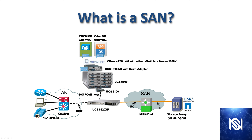You can see on the left-hand side you've got the LAN, and then an aggregation or core device on the LAN connects to the UCS-6120XP fabric interconnect. Connecting up to the fabric interconnect is a UCS-B series chassis, and the fabric interconnect also has a Fiber Channel link over to the SAN and an MDS-9124, which then connects via Fiber Channel to a storage array.